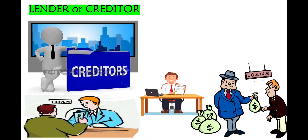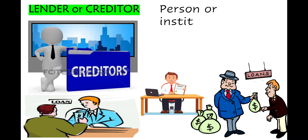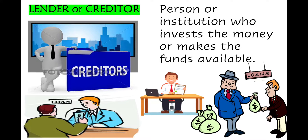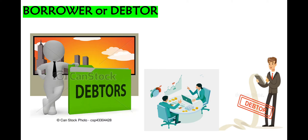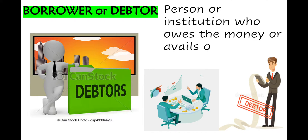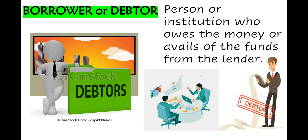The first one is Lender or Creditor — a person or institution who invests the money or makes funds available. The second is Borrower or Debtor — a person or institution who owes the money or avails of the funds from the lender.